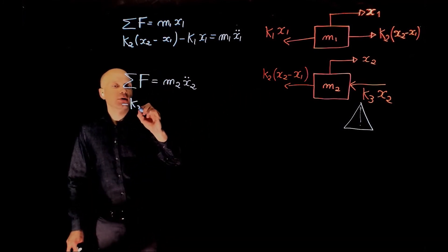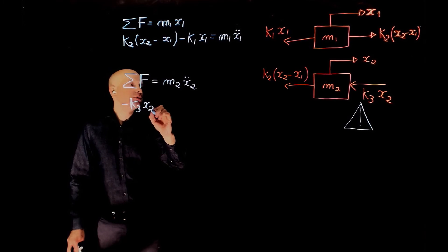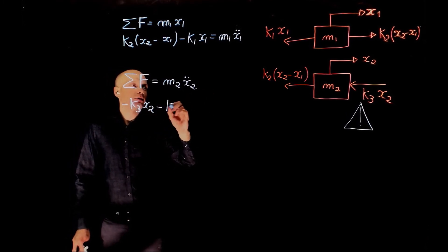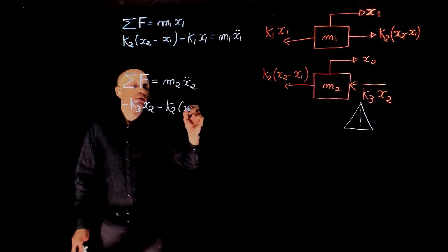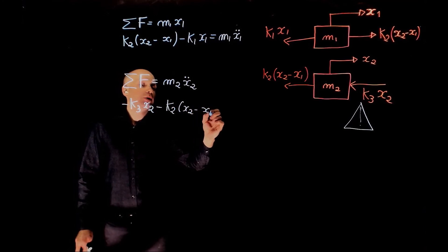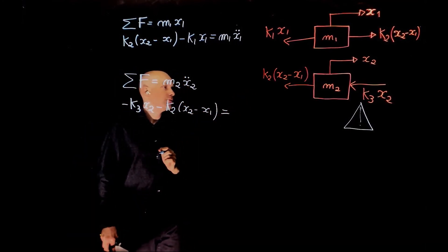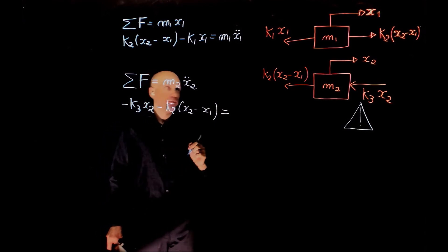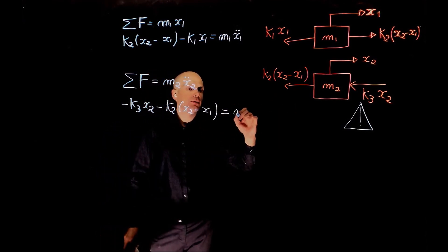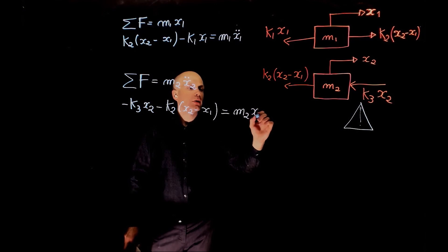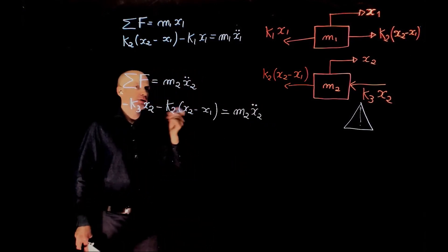And all forces in this case are negative, we have negative k3 x2 minus k2 x2 minus x1 equals to m2 x2 double dot.